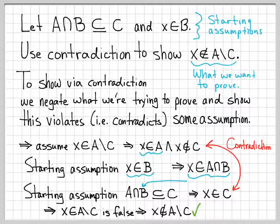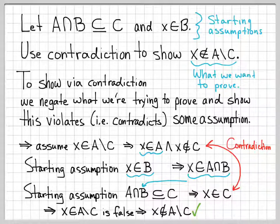We could have done it directly, probably, but in this example we've used contradiction. With contradiction, the strategy is always very similar: take what you want to prove, assume the opposite, get something that doesn't make any sense, and then you can go back to concluding what you wanted.